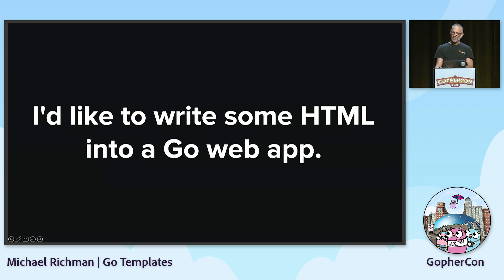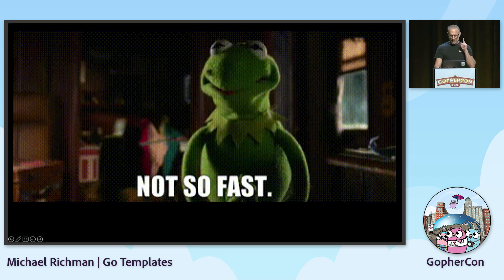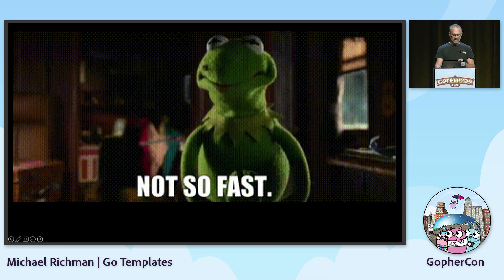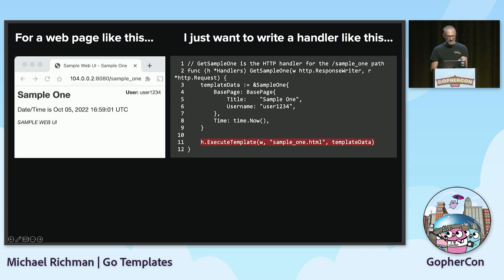When we were writing web apps, of course we want to write some HTML in our Go web app. HTML template — the obvious, simple go-to, right? Not so fast. For a simple web page like on the left, I want to write handler code that looks like what's on the right. The key is this is a very simple handler function: all it's doing is setting up some data to pass to a template and executing the template. But this is not how templates work.